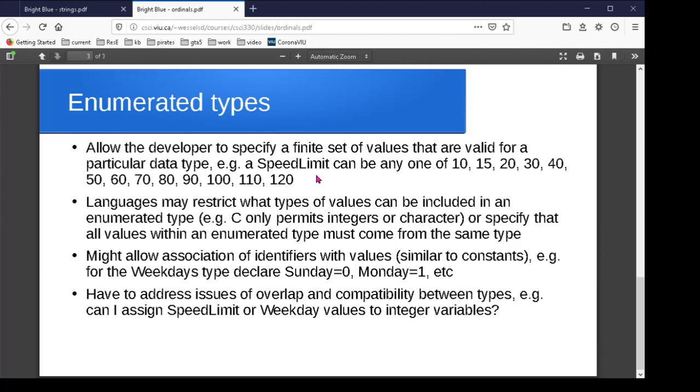You might also associate different names with specific values in your enumerated data type. This is something that C's enums do where you can create your enumerated type and say my enumerated type is going to represent the weekdays. It's going to assign the value zero with the name Sunday or the identifier Sunday and the value one with the name Monday. Again, it makes it more readable, makes it clearer to the user.